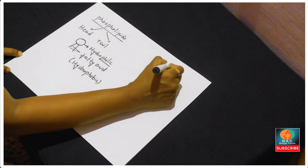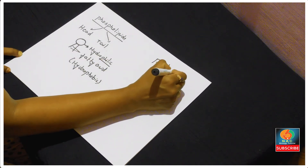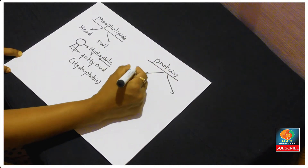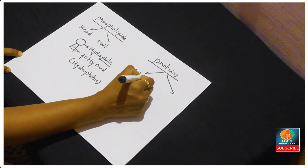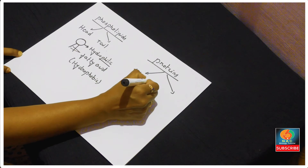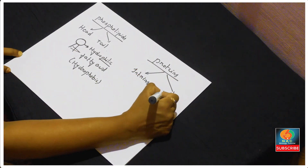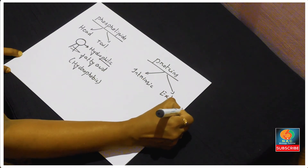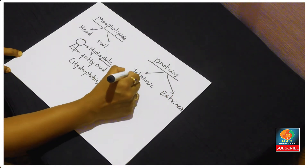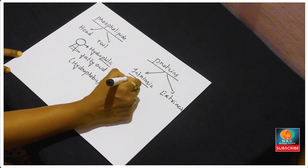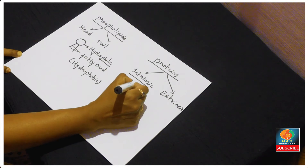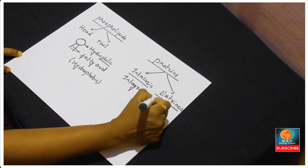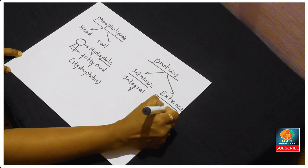The plasma membrane is also made up of proteins. Proteins are of two types: one is intrinsic protein and another is extrinsic protein. Intrinsic protein is also known as integral protein, and extrinsic protein is known as peripheral protein.